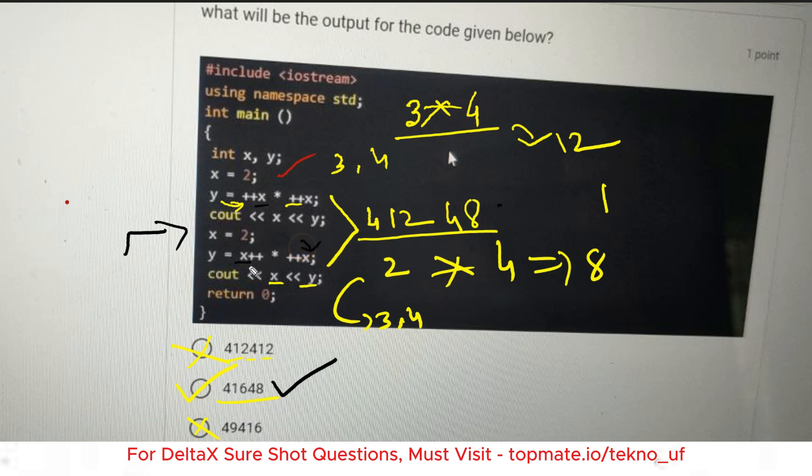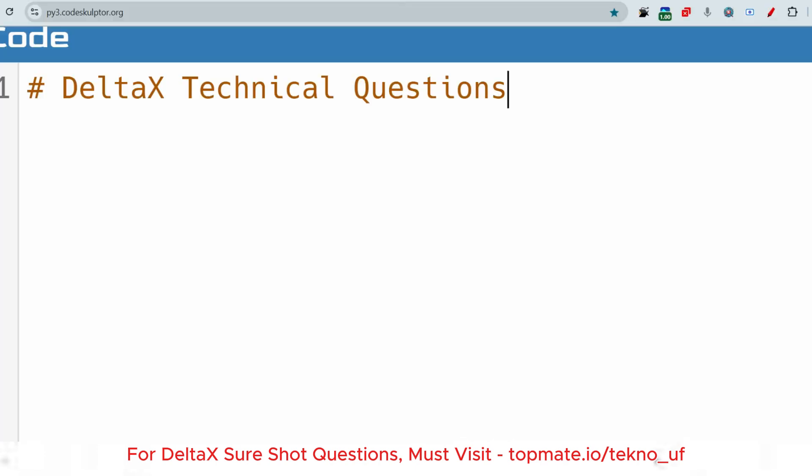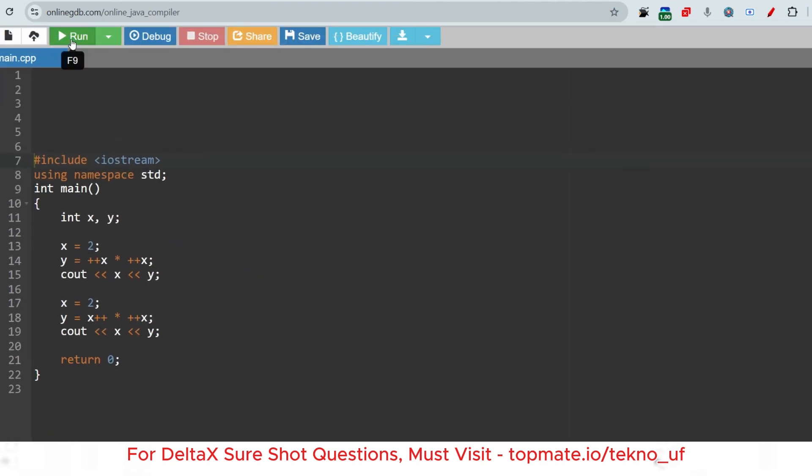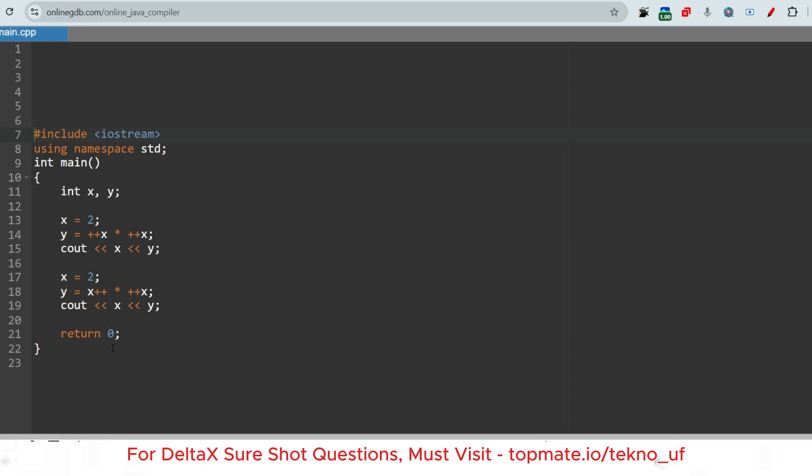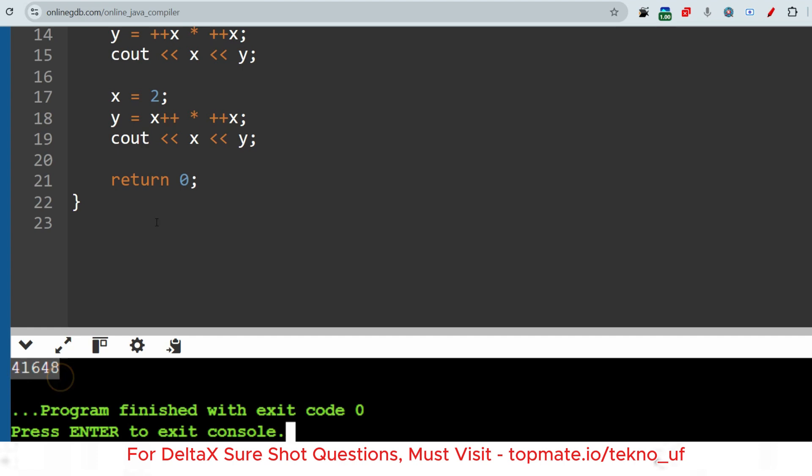I hope you understood. Let me just compile the code so that there is no confusion remaining. So this is the code. If I run this now, then what happens? Let me show that. As you can see, 4 16 4 8 is the right output.